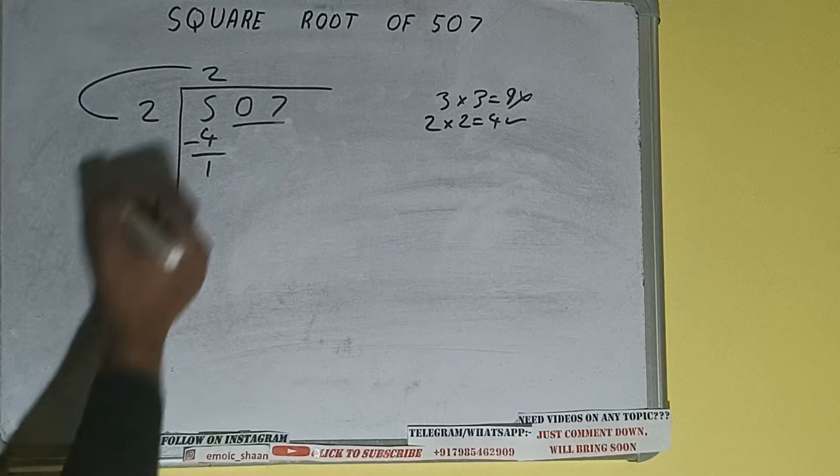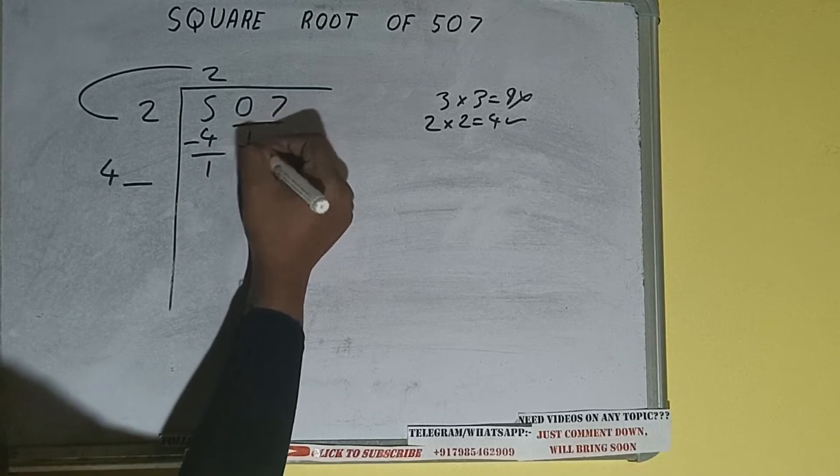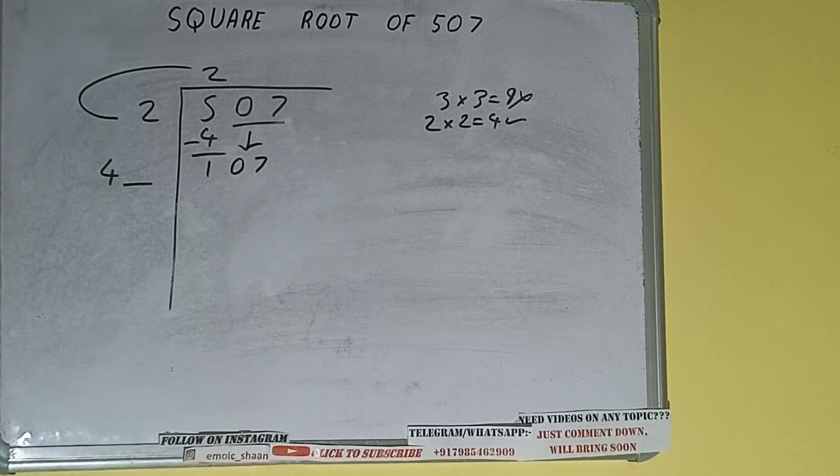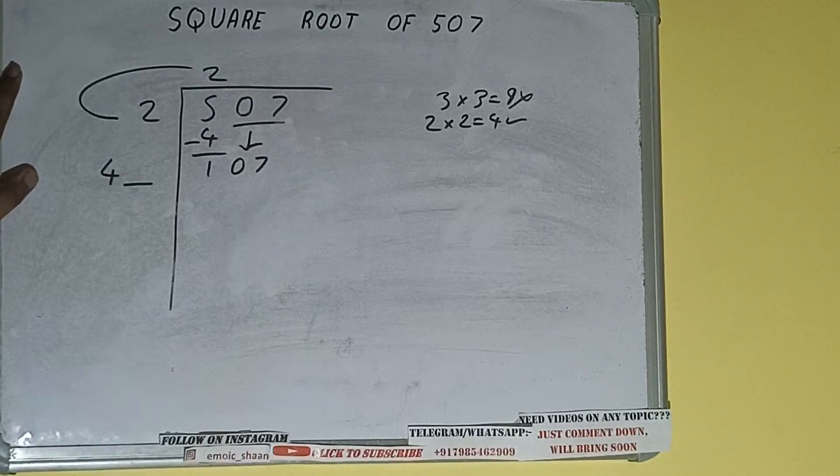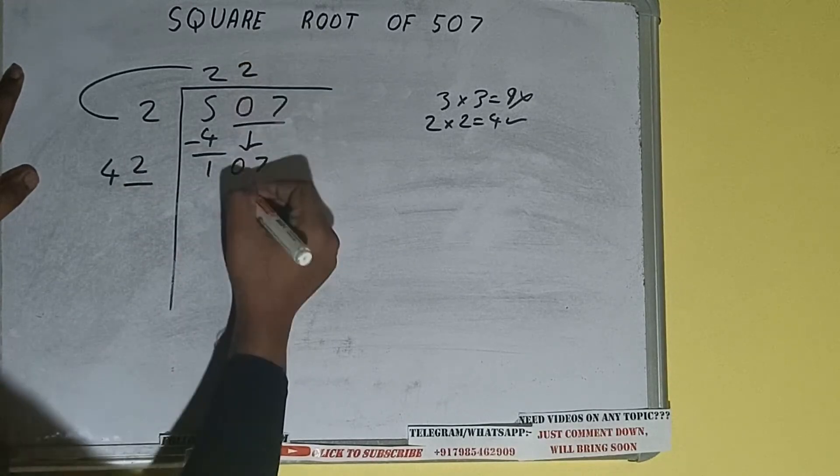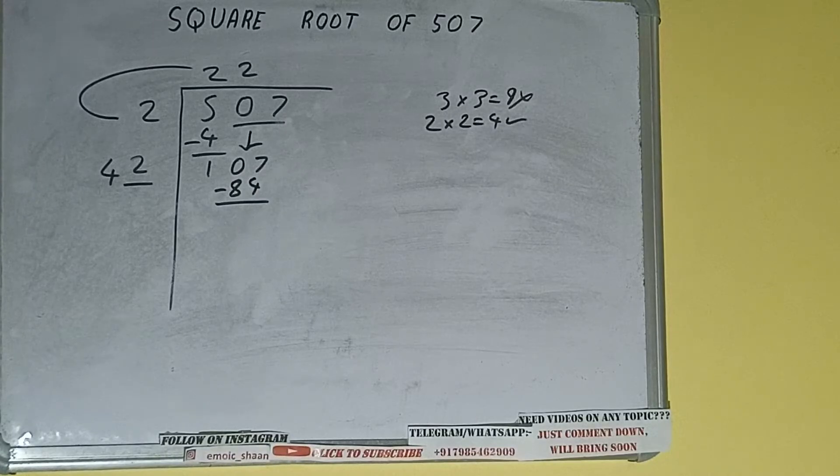Write it here and keep a digit extra, and this number we need to make it big. So bring the next pair down and it will be 107. Now whatever number we write here, we have to write here also. So if we write 2 here and 2 here, 84, subtract and we'll be having 23.